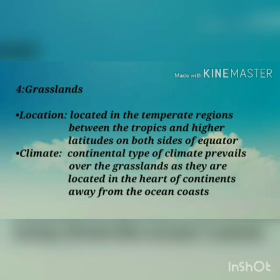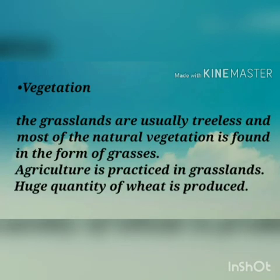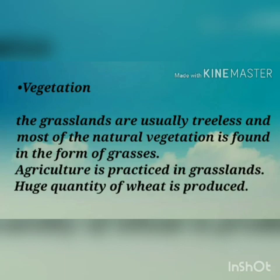The fourth region is grasslands. Location: this region is located in the temperate regions between the tropics and higher latitudes on both sides of the equator. Climate: the continental type of climate prevails over the grasslands as they are located in the heart of continents away from ocean coasts. Temperature: summers are warm with temperatures ranging from 19 to 22 degrees centigrade. Winters in the northern hemisphere are cold and temperature usually remains below freezing point. Vegetation: the grasslands are treeless and most natural vegetation is grasses. Agriculture is practiced here and huge quantities of wheat and other crops are produced.